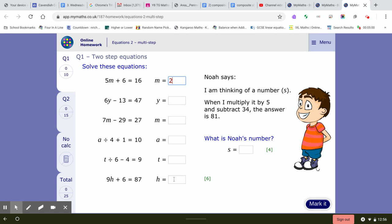For this type of example, think of a number s, multiply it by 5 and subtract 34. That means 5s minus 34 is equal to 81. So 5s must be equal to 81 plus 34, that leaves you with 115. So how many 5s are in 115? It goes in 23 times, so the answer to this must be 23.